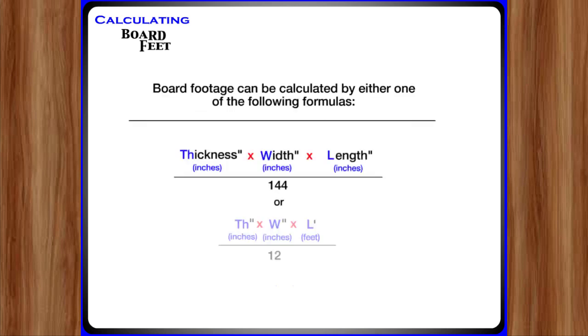Board footage can be calculated by either one of the following formulas: thickness times width times length divided by 144, or thickness times width times length divided by 12.